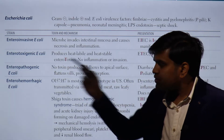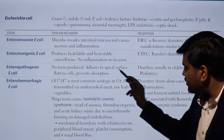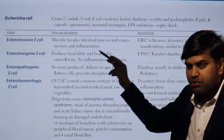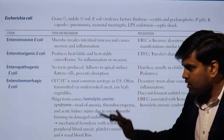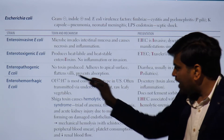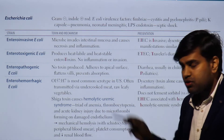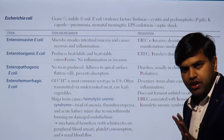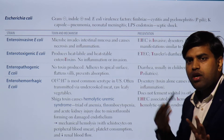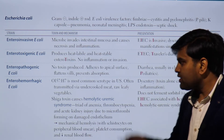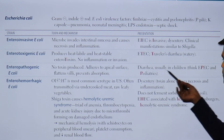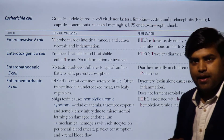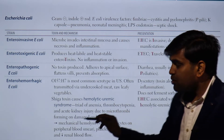Enteropathogenic E. coli, abbreviated EPEC, involves no toxin production, no inflammation, and no invasion. The bacteria adhere to the apical surface of intestinal epithelium, flatten the villi, and prevent absorption. Because nothing can be absorbed, everything consumed is lost in stool — causing diarrhea. EPEC is responsible for pediatric diarrhea. In children with diarrhea, think EPEC.